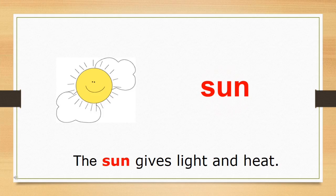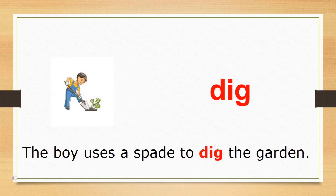Let's read the word. And the word is sun. Children, we all know about sun. Where can we see sun? Yes, in the sky. And sun is the biggest star in our solar system. Let's use sun in the sentence. The sun gives light and heat.